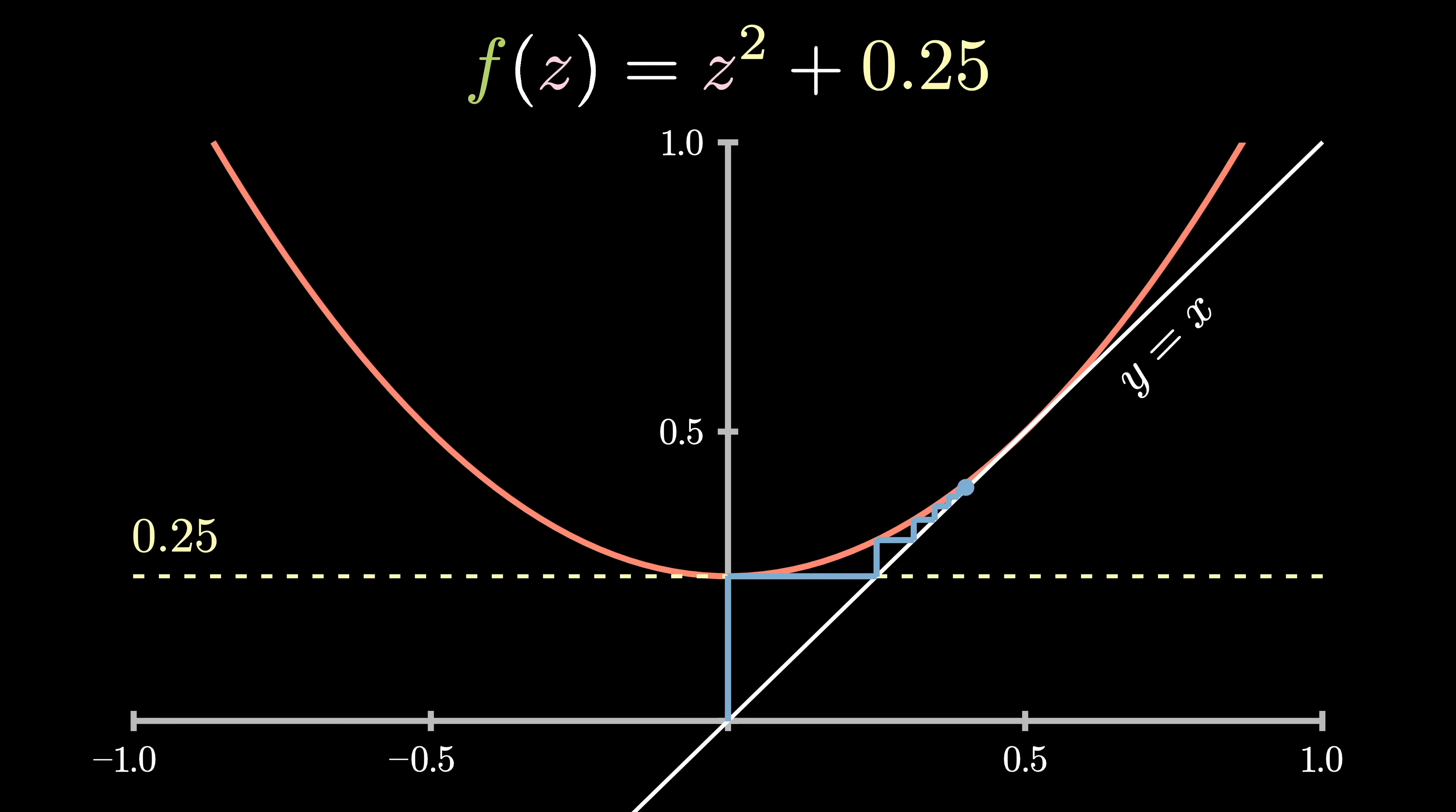Remember, what we're dealing with is the number of steps it takes to blow up to infinity. If you remember, 0.25 happens to be inside the Mandelbrot set, so it never blows up to infinity. Since each step corresponds to two collisions here, you can imagine that we're looking for some formula that gives the number of times the blue dot touches the line y equals x.